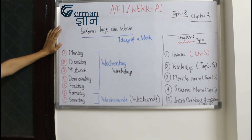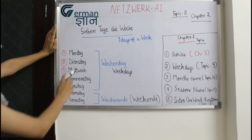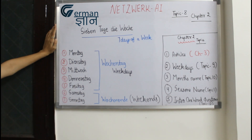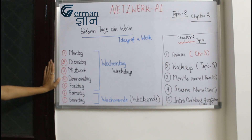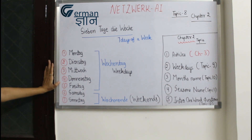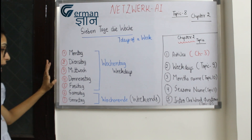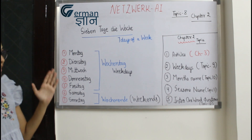First is Monday - Monday is Montag. Second is Dienstag, which is Tuesday. Third is Mittwoch, which means Wednesday. Fourth is Donnerstag, which means Thursday. Fifth is Freitag - Freitag is Friday.